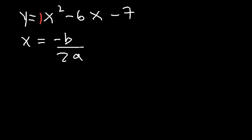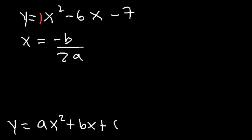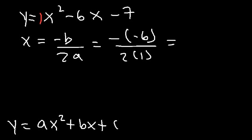a is the number in front of x squared, so a is 1; b is negative 6; c is negative 7, based on the standard form ax squared plus bx plus c. So the x-coordinate of the vertex is going to be negative b over 2a. Since b is negative 6 and a is 1, this is 6 divided by 2, which is 3. So the x-coordinate is 3.